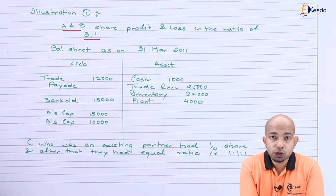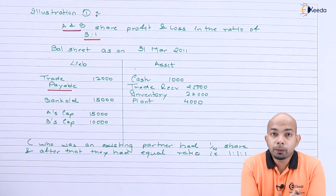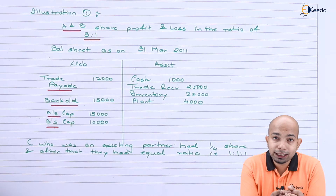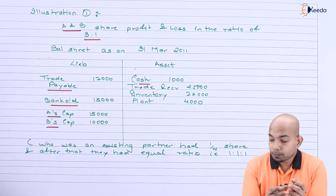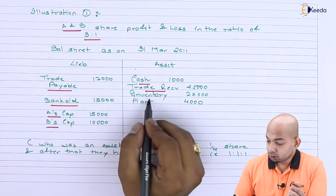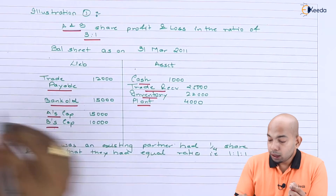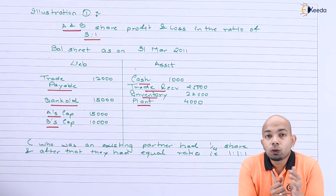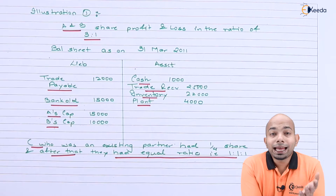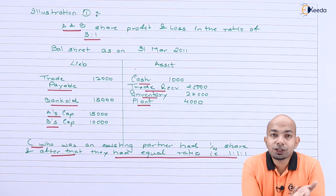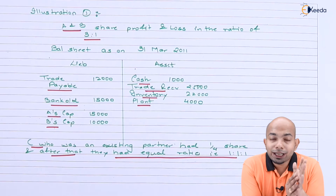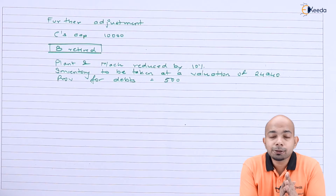A and B shared profits and losses in the ratio of 3:1. The balance sheet shows trade payables of 12,000, bank overdraft of 15,000, A's capital of 15,000, and B's capital of 10,000. Cash is 1,000, trade receivables 25,000, inventory 22,000, and plant 4,000. C was also an existing partner admitted last year with one-third or one-fourth share, and after his admission they shared profits and losses equally in a 1:1:1 ratio. C's capital is mentioned as 10,000.